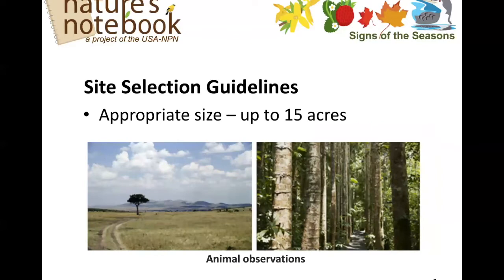Regarding appropriate size: on Nature's Notebook, you cannot have sites that are greater than 15 acres. As an example, if you have a 30-acre pond you want to observe, you would split that into two sections of 15 acres each.